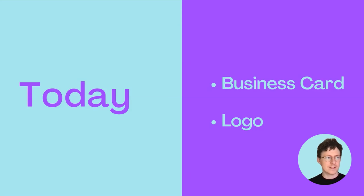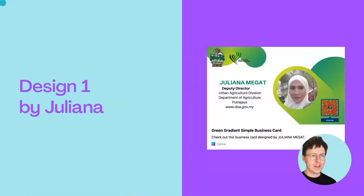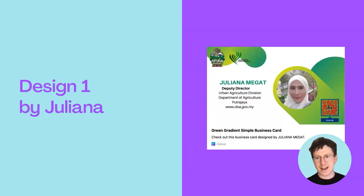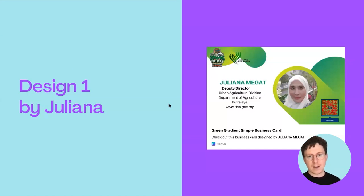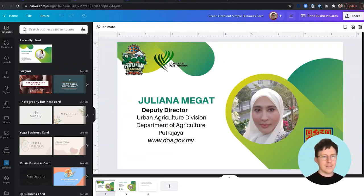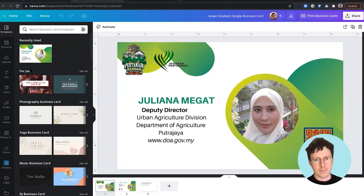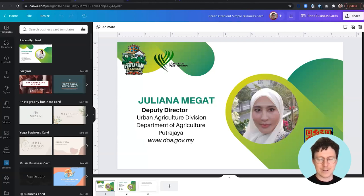Let's jump into the first design, which is the business card. This is from Juliana. I'm going to jump into the editor now so we can have a look. Here it is. I think Juliana has used a template but customized it with a few extra details — there are a couple of logos at the top, her job position and the urban agriculture division, and also a QR code which you can scan to get more information. I tested it and it works — it takes you to a link tree page with access to her social media accounts.